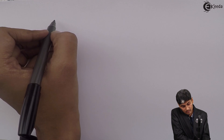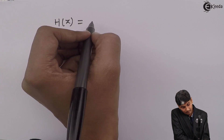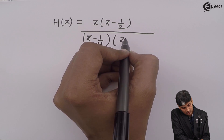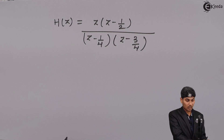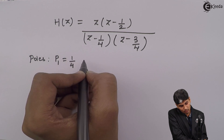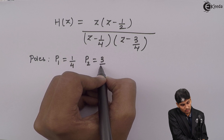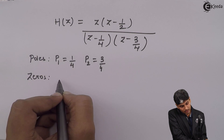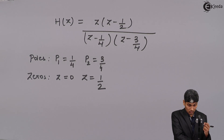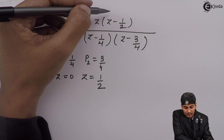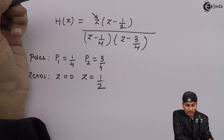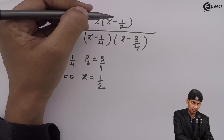So the final H(z) = z(z - 1/2) / [(z - 1/4)(z - 3/4)]. The poles of the equation are p1 = 1/4 and p2 = 3/4, whereas the zeros are at z = 0 and z = 1/2. If you put z = 0 in the numerator it goes to 0, so there is a zero at z = 0 and another at z = 1/2.